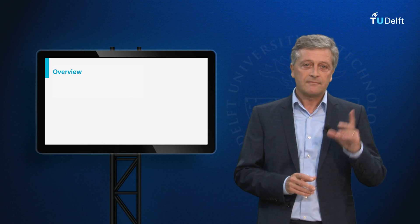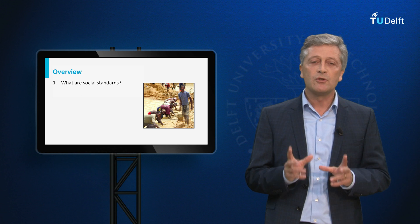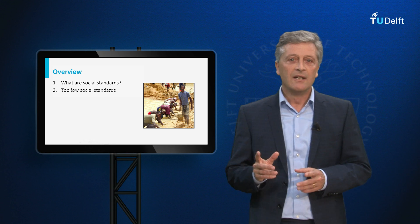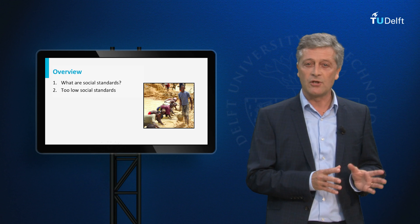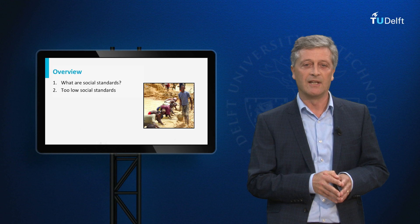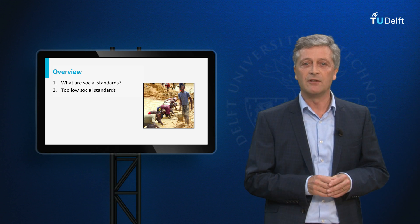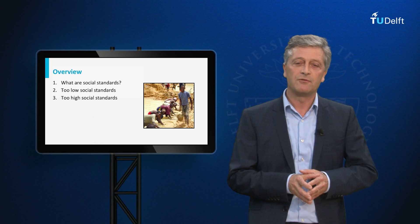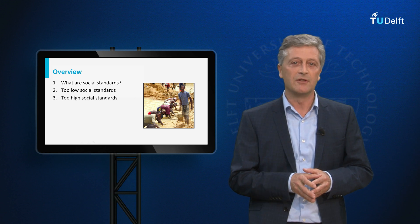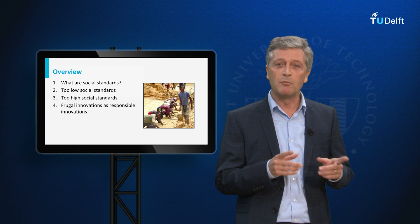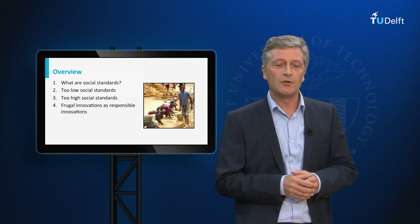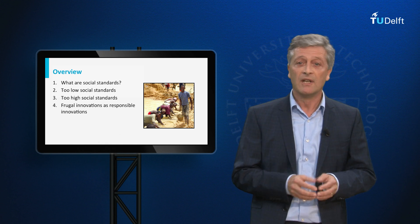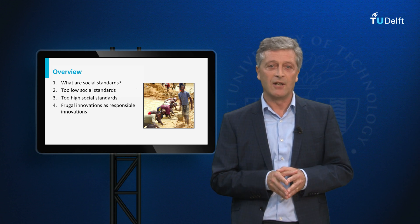In this presentation I am taking the following steps. First, I introduce two key elements and one key characteristic of social standards, using the example of child labour. Second, I will argue that frugal innovations with too low social standards — for example by exploiting workers or using child labour — cannot be considered responsible innovations. Third, I will show how frugal innovations with too high social standards are likely to create barriers of entry for new firms and thus obstruct new innovations. Fourth, I will combine the earlier points to conclude that frugal innovations contribute to economic development when social standards are as high as possible to ensure decent working conditions and as low as necessary to not stifle a next round of innovations.